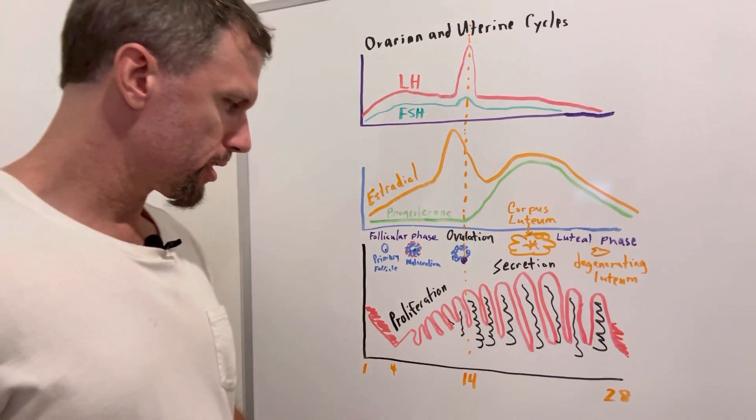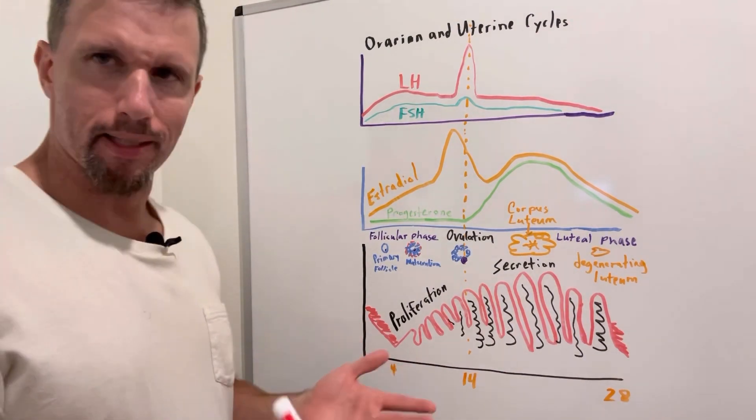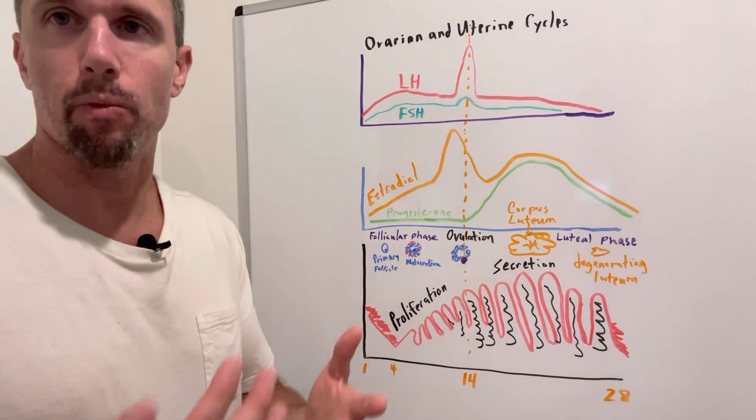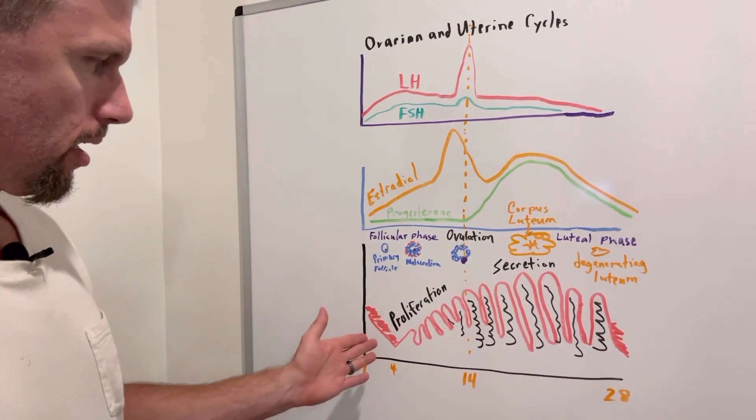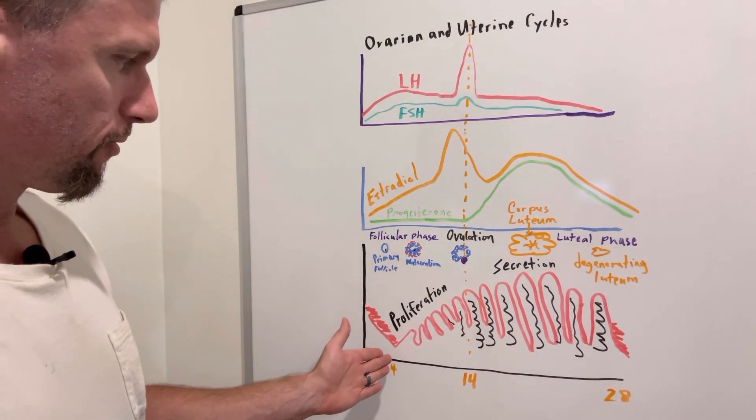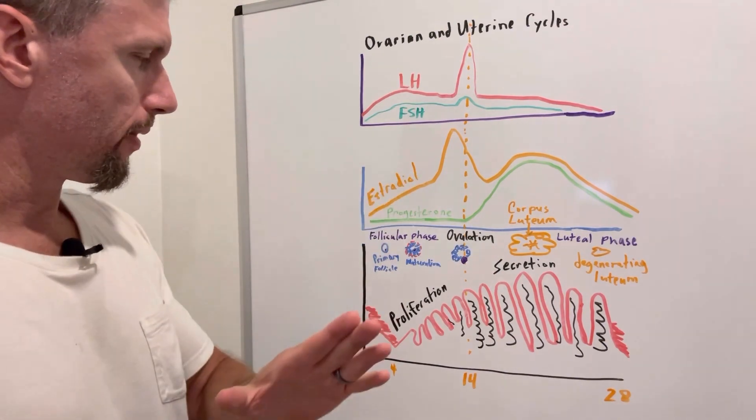So let's just start with the uterine cycle. Days one through four are menses, so that's your period where you're releasing, shedding off that endometrial lining. And then at that point, about day four, estrogen levels start to rise. And let me tell you why this happens.